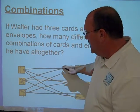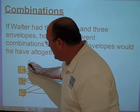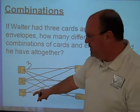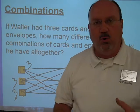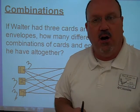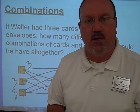Draw the line from card one to all the possibilities. Well, there's three possibilities. There's also three possibilities with card number two, and three possibilities there. So the total combination of cards and envelopes is nine. Three plus three plus three.